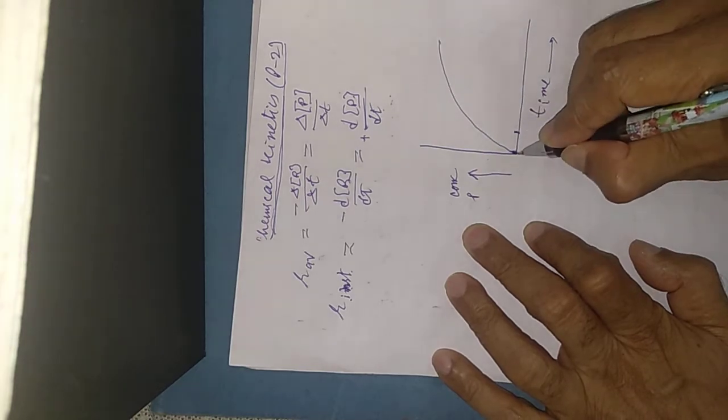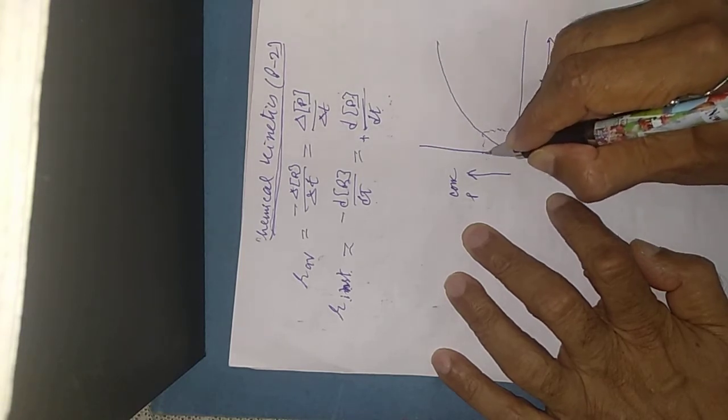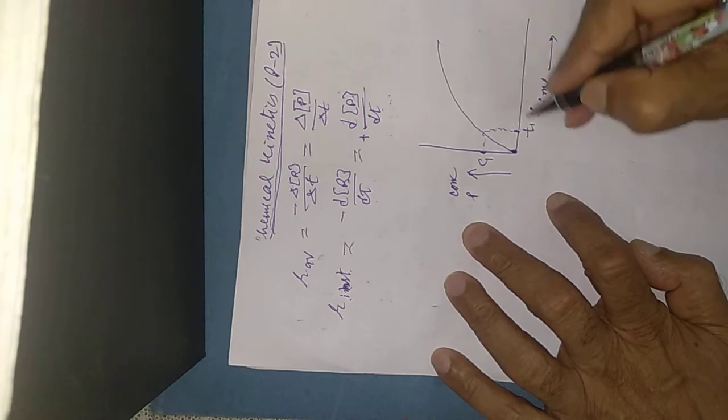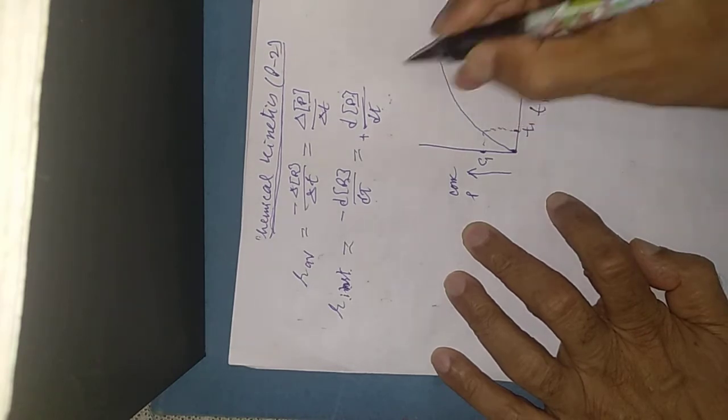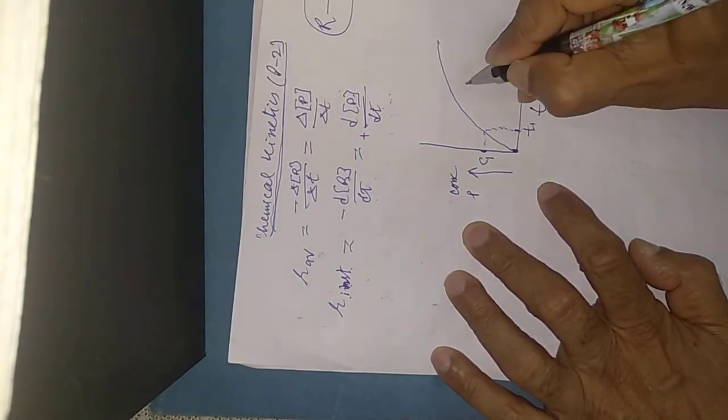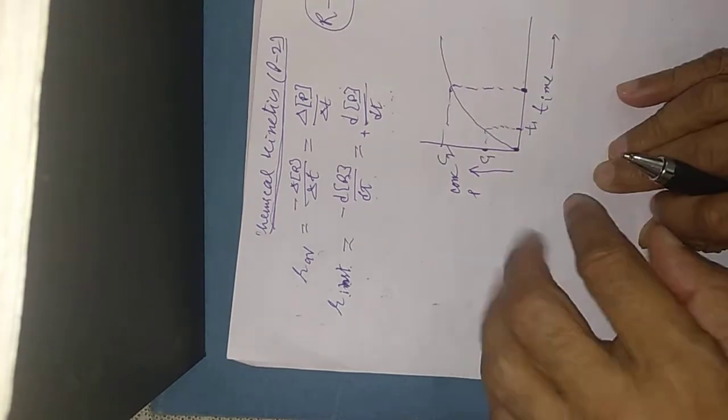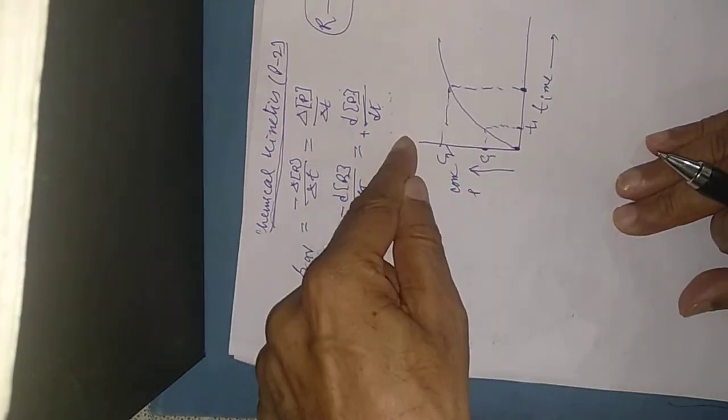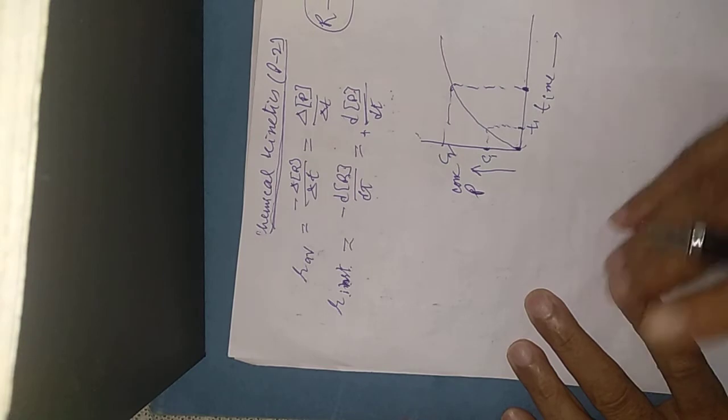This is the concentration C1 when time is T1. After some more time, this is the concentration C2. I am taking this with respect to products. If you write reactant, the concentration is decreased. I am saying products because product concentration is increased. This is time and this is concentration.